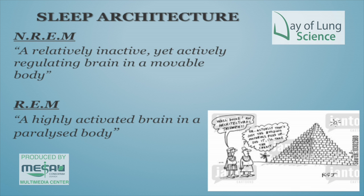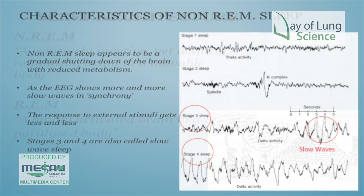Characteristics of non-REM: Stage 1 is very active. Stage 2 is where you start to get K-complexes. Stage 3 is almost wakeful but with more slow wave activity. Stage 4 is very slow wave, deep — this is your brain activity profile. These represent increasing depth of sleep.